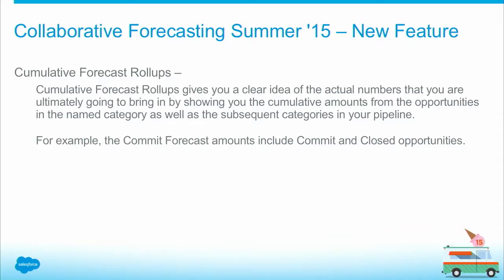So first, I'm going to talk about the feature. The feature is going to be called cumulative forecast roll-up. What it does is gives you a clear idea of the actual numbers that sales is going to bring in by looking at the actual forecast category you're in plus any subsequent categories. For example, if we say commit forecast, it means commit plus closed.